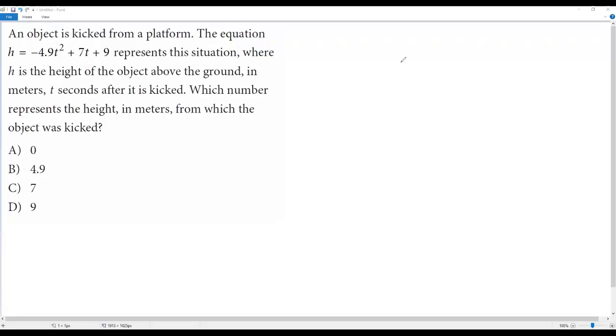They are asking us to find the initial height, that is the height from where the object was kicked. So for that, what I need to do is plug in t = 0 into this equation.